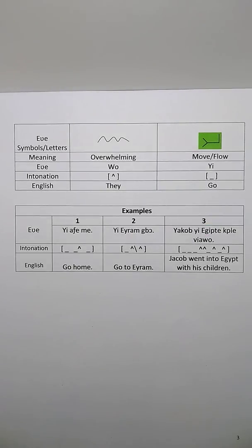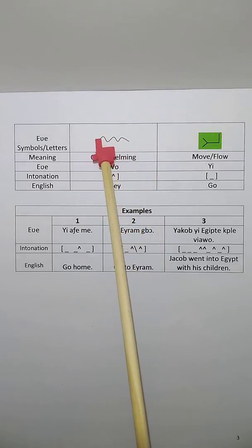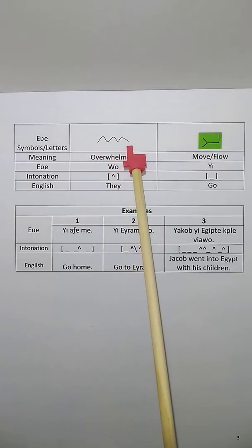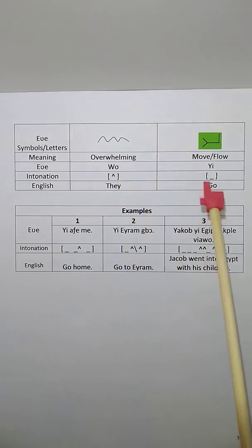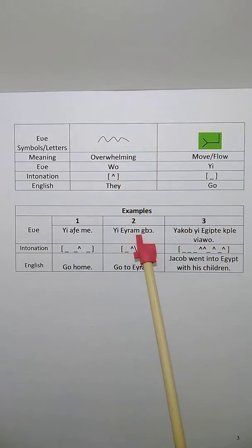And how do you say they go in ancient Hebrew? It is wo ye. Wo ye, high intonation and low intonation. Wo ye. And wo is a group of people. This is the symbol to express the plural, it is wo. And ye.